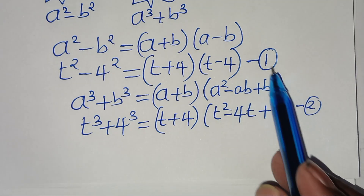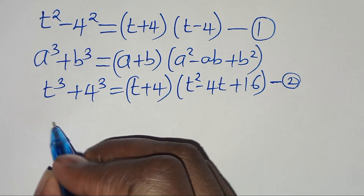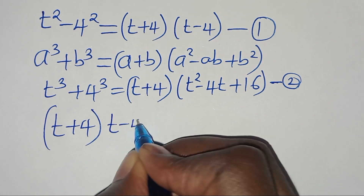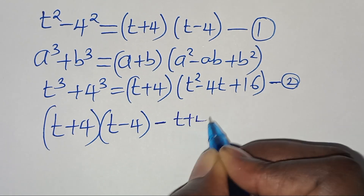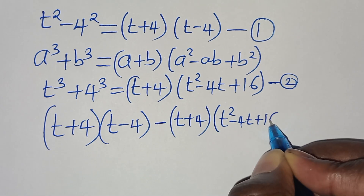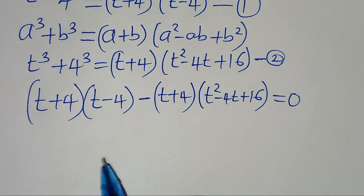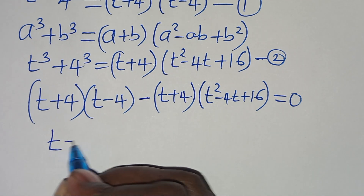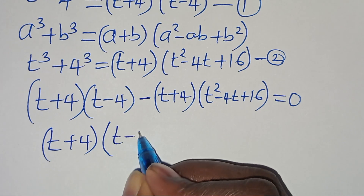Now let's combine equations 1 and 2. We have t plus 4 multiplied by t minus 4, minus t plus 4 times the quantity t squared minus 4t plus 16, equals 0. Since t plus 4 is common to both parts, we can factor it out.